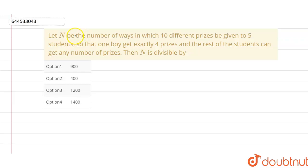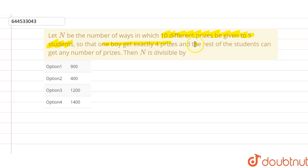The given question here is: let n be the number of ways in which 10 different prizes can be given to 5 students, so that one boy gets exactly 4 prizes, and the rest of the students can get any number of prizes. Then n is divisible by which of the following numbers?